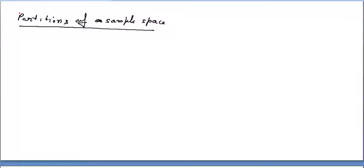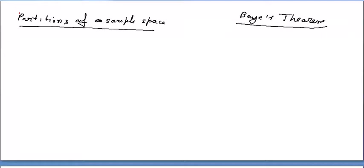The basic concept is Bayes theorem, and that is very very important. To understand or derive the formula of Bayes theorem, we need to discuss some basic concepts. The first is the partition of the sample space.